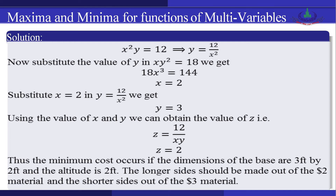Using x = 2 and y = 3, we find z = 12/(xy) = 12/6 = 2. Thus the minimum cost occurs when the dimensions of the base are 3 feet by 2 feet and the altitude is 2 feet. The longer side should be made of the $2 material and the shorter side of the $3 material to keep the cost minimum.